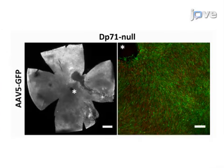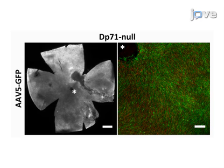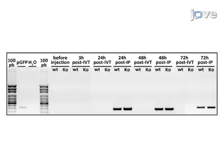Confocal microscopy and PCR are used to show the transduction pattern, indicator of the ILM integrity, and to detect AAV particles in the bloodstream, thus demonstrating permeability of the blood retinal barrier.